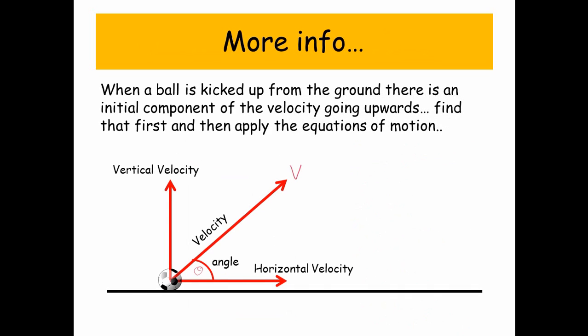Okay, let's look at something a bit more complicated. So when a ball is kicked up from the ground, there is an initial component of velocity going upwards. Find that first, and then apply the equations of motion. So we've got a velocity V, and we can split that into two components, a vertical and a horizontal component. To find the vertical component, well, that's just V times sine theta. The horizontal component, well, that's V times cos theta.